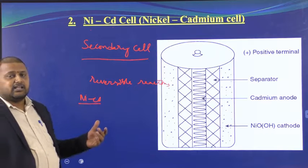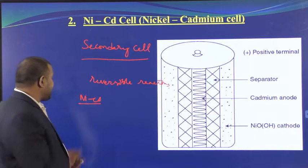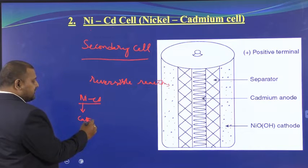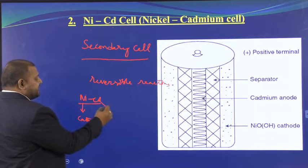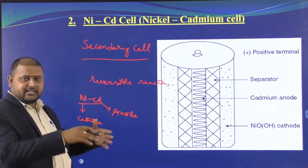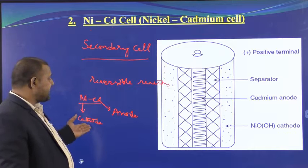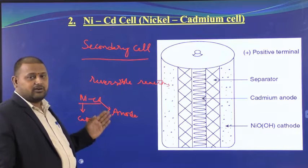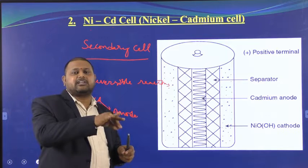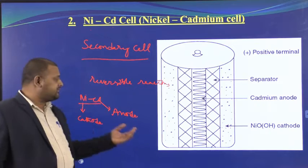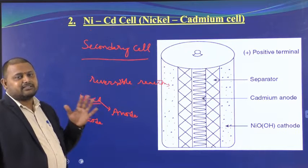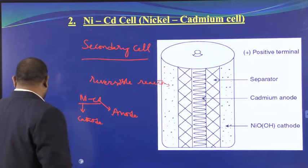While discharging, nickel acts as the cathode and cadmium acts as the anode. While recharging — once the battery is exhausted and you put it on charge — the anode becomes the cathode and the cathode becomes the anode. That is the point you should remember.